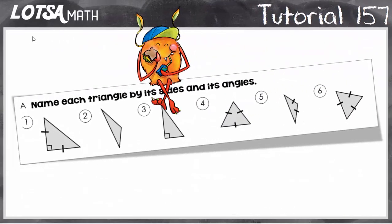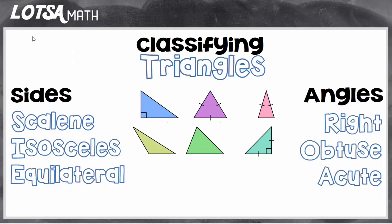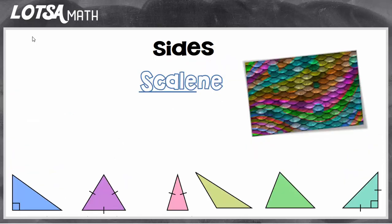For these questions we're going to classify triangles. The directions say that we need to name each triangle by its sides and its angles. There are two ways you can classify triangles: by their sides, or by their angles. They all have different names, so let's learn the names of each type.